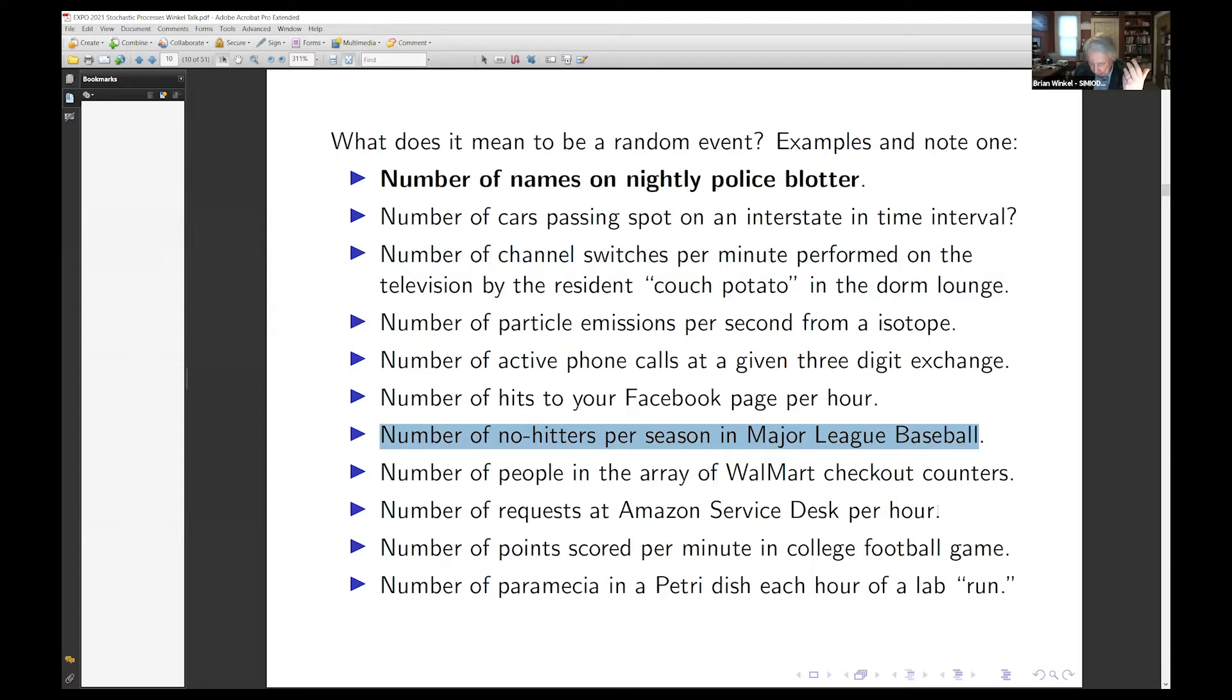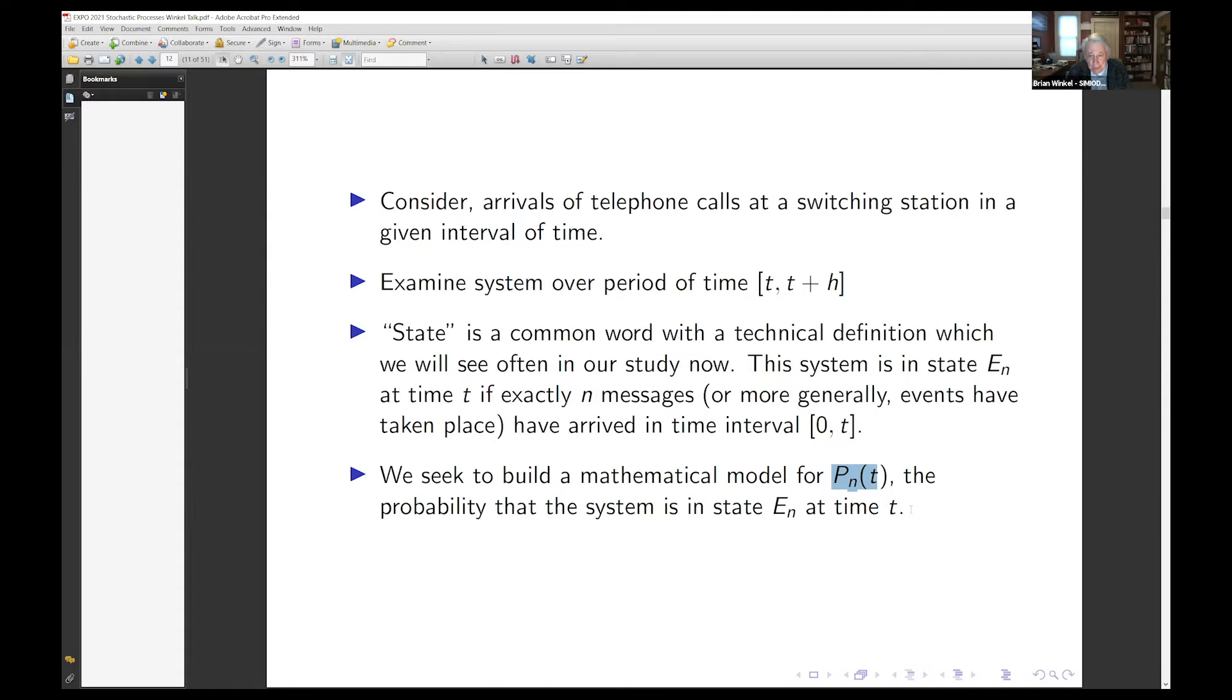We're going to consider arrivals in a telephone switching system. We'll examine the system over a short period of time, T to T plus H. Your differential derivative salivary glands should start salivating when you see T to T plus H. We're going to talk about the state. The system will be in state E_N if there are N messages. What we're going to try and build a model for is the probability that the system is in state N at time T.